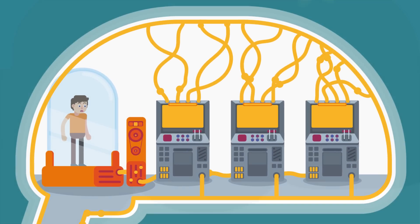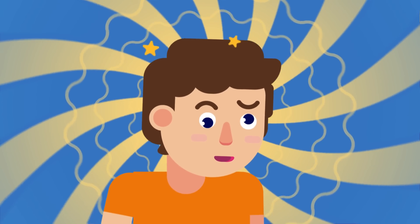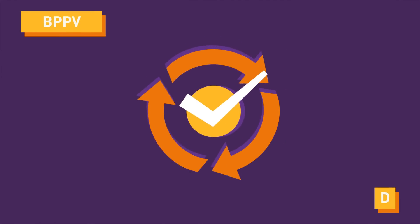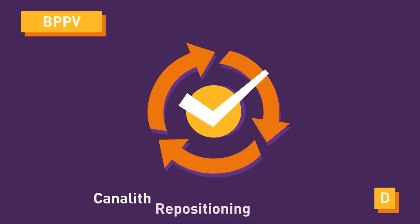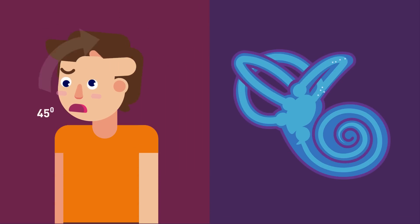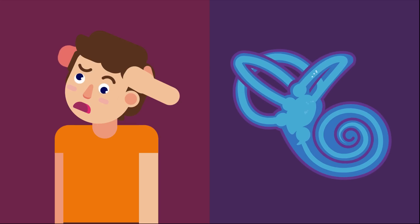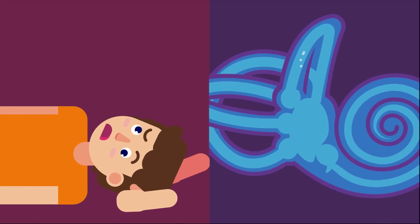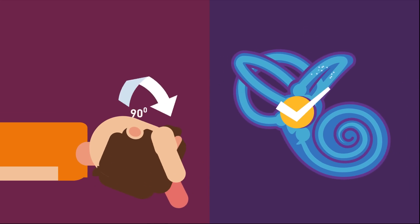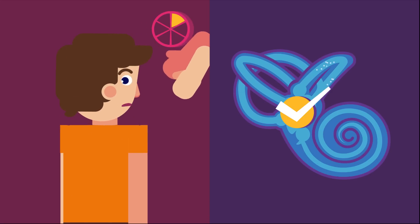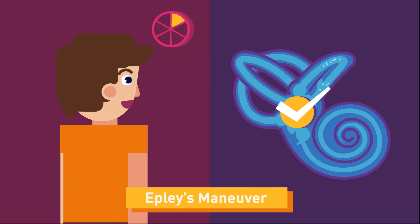How to treat BPPV: The most common and effective treatment for BPPV is the Canalith Repositioning Procedure. It consists of several simple and slow maneuvers for positioning the head, aiming to move the particles from the semicircular canal to the utricle where they don't pose a problem. Each position is held for around 30 seconds, after which symptoms or abnormal eye movements stop. This procedure is more widely known as Epley's Maneuver.